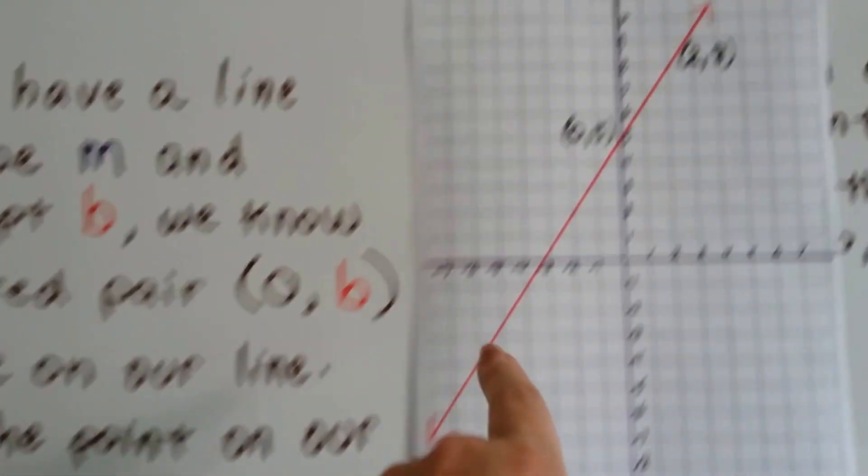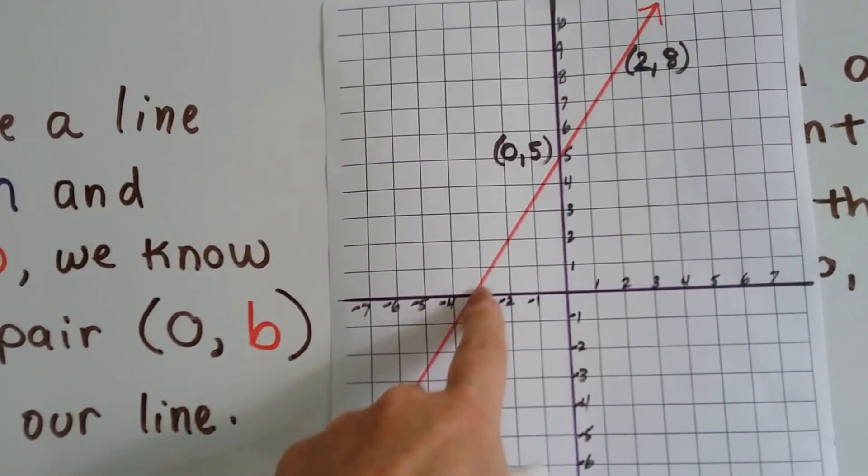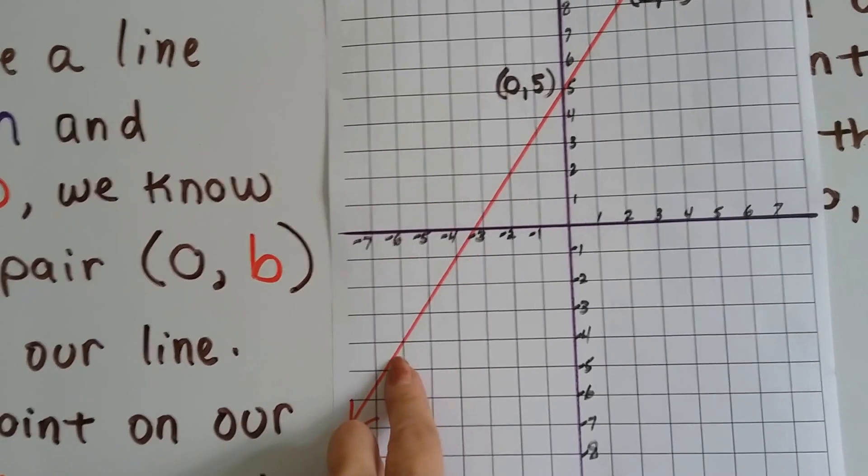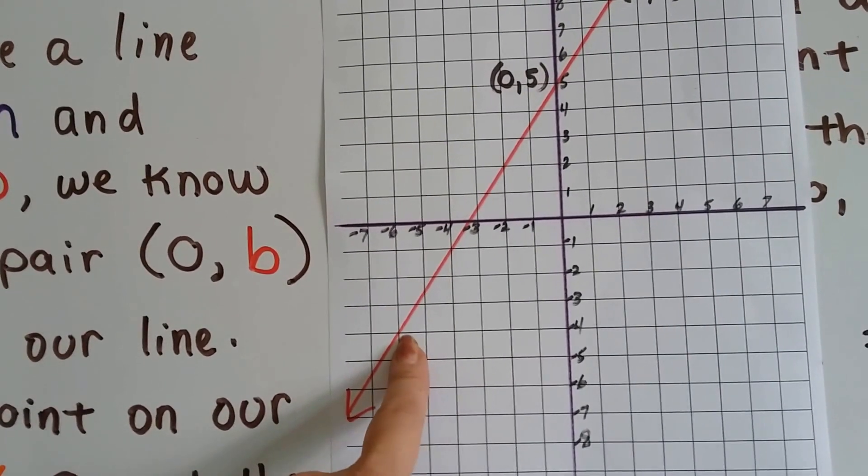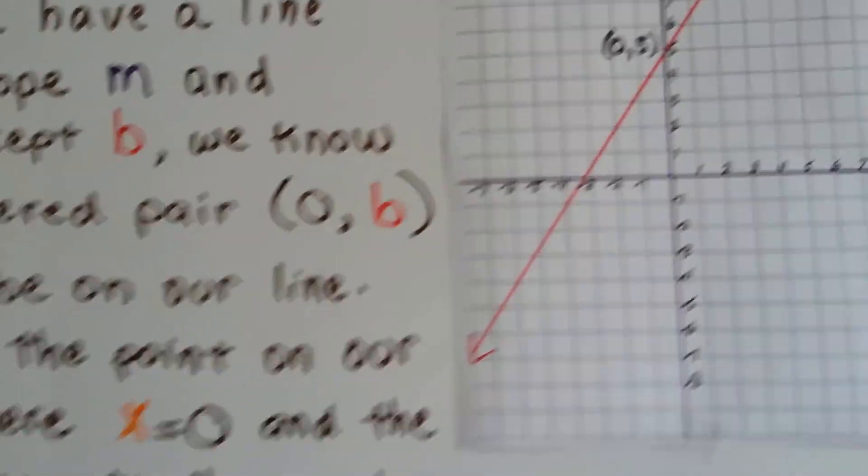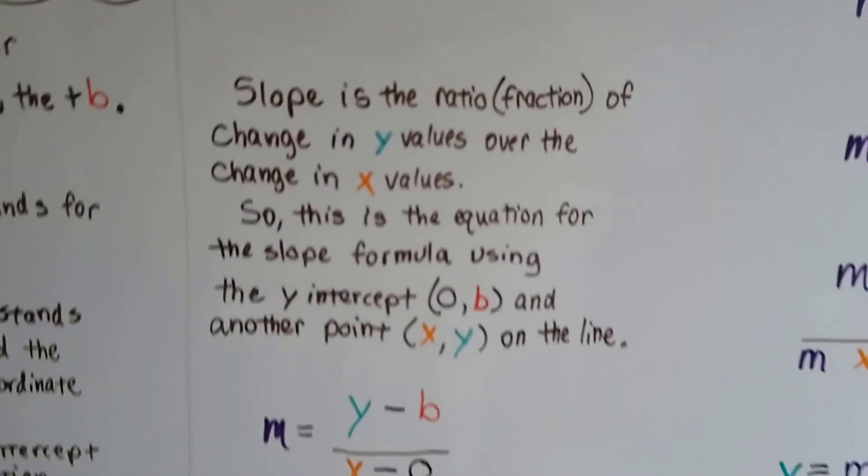Now I could have used any other point like this (2, 8), or this one, or any place where it crossed. But I'm just going to use (x, y).